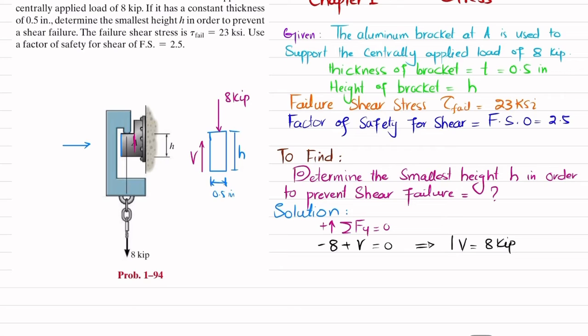Now you have this shear, so we know that shear stress or allowable shear stress is equal to shear force divided by shear area. So shear force is 8 kips divided by shear area, which is equal to 0.5 multiply by the height h. I get 8 kips, convert it into 8 × 10³ pounds divided by 0.5h. This is your equation number one.